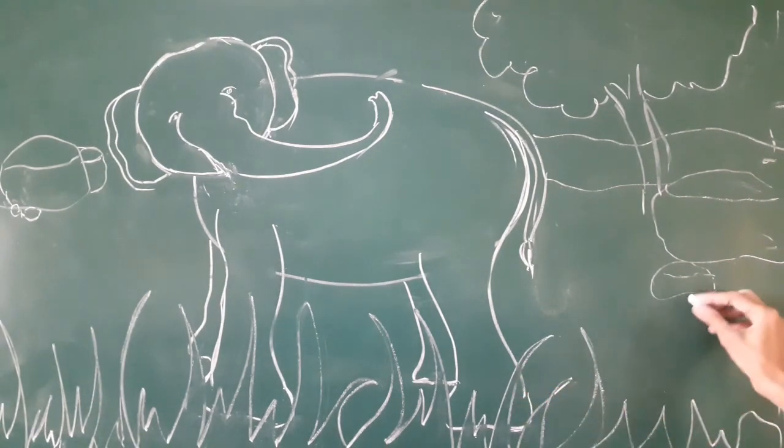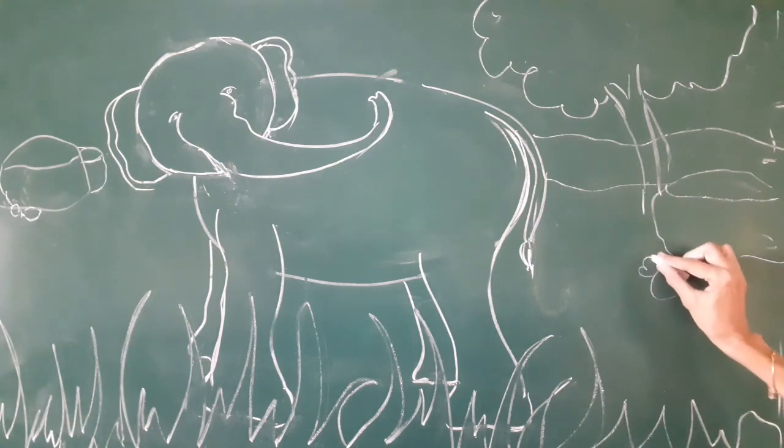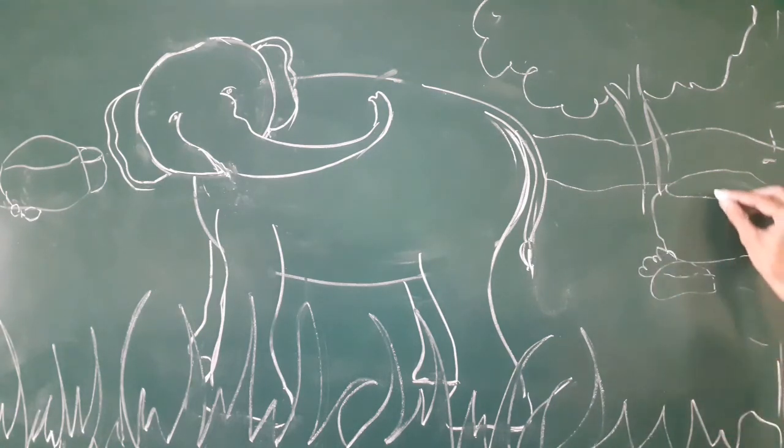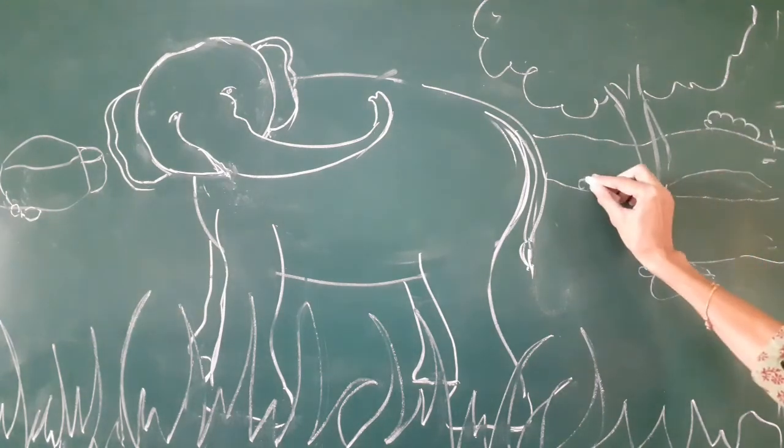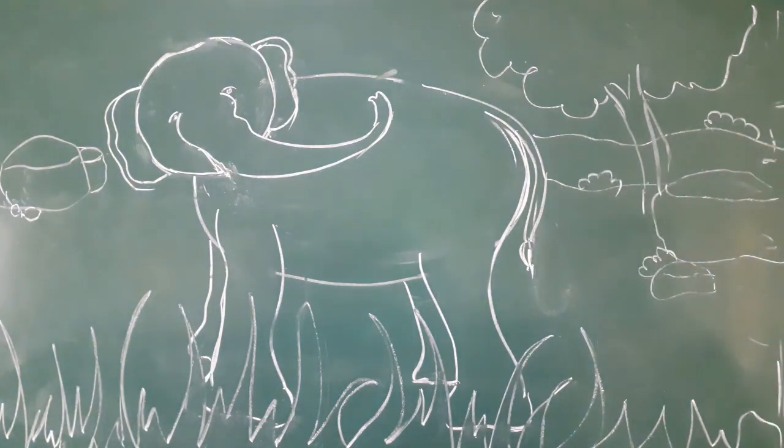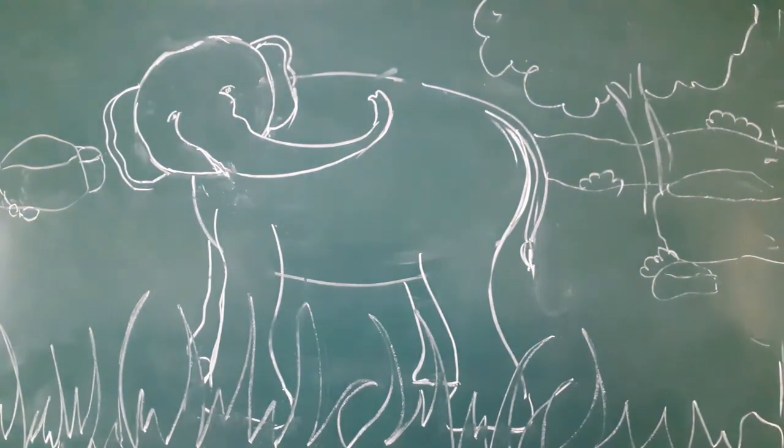And some bushes here. You can put here some bushes, very small because it is very far away. So this way you have to complete the drawing of the elephant as well as the background also.